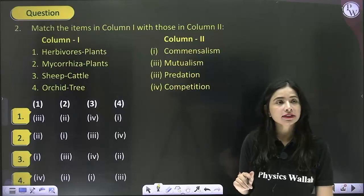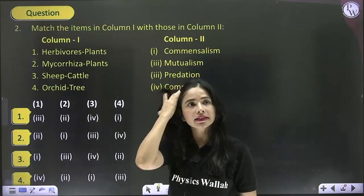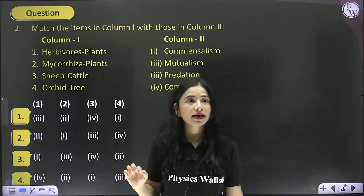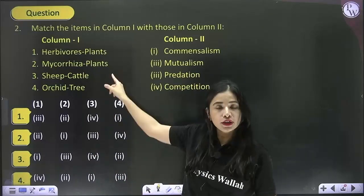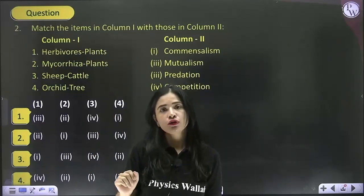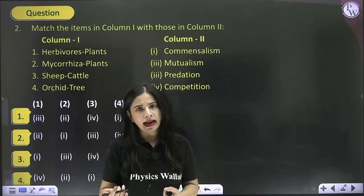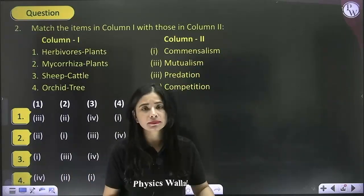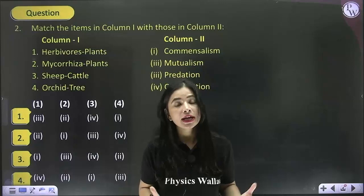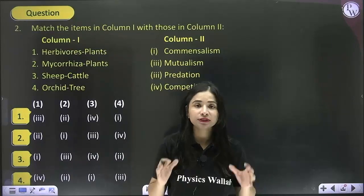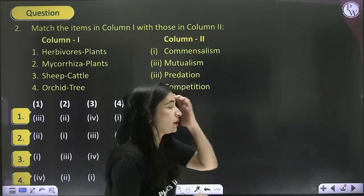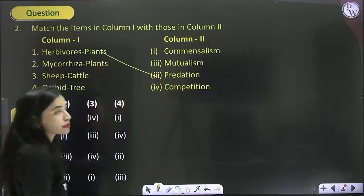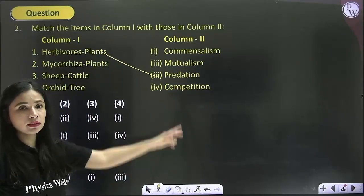The next question says match the items in column 1 with column 2. Column 1 first: herbivore and plant — there is grass and a rabbit. The rabbit feeds on the grass; rabbit is a herbivore, plants are autotrophs. This eating habit is known as predation. So herbivore and plants show predation — match one with three.